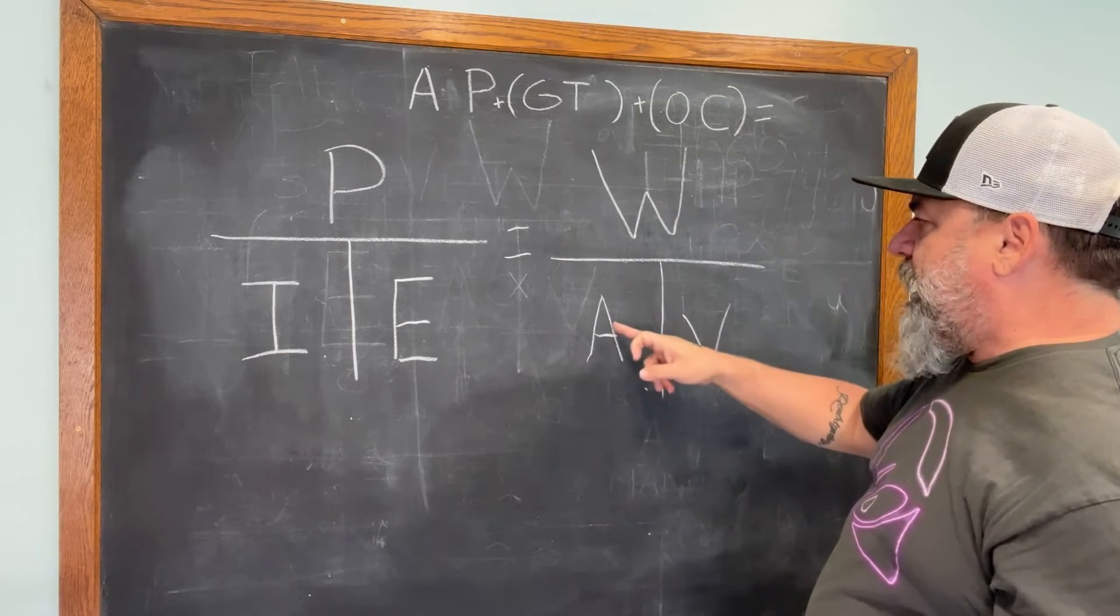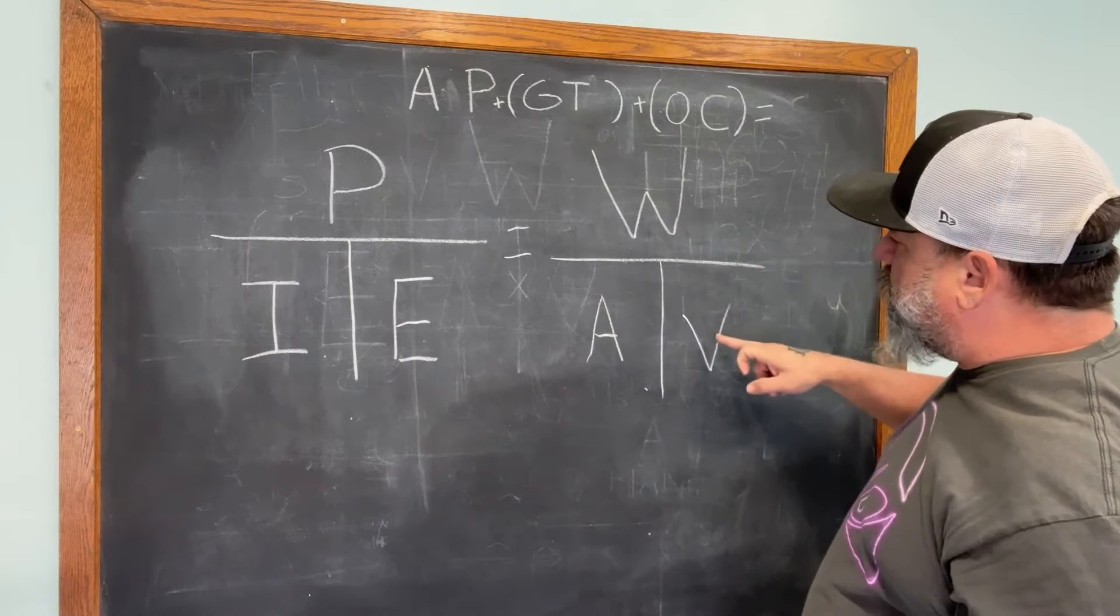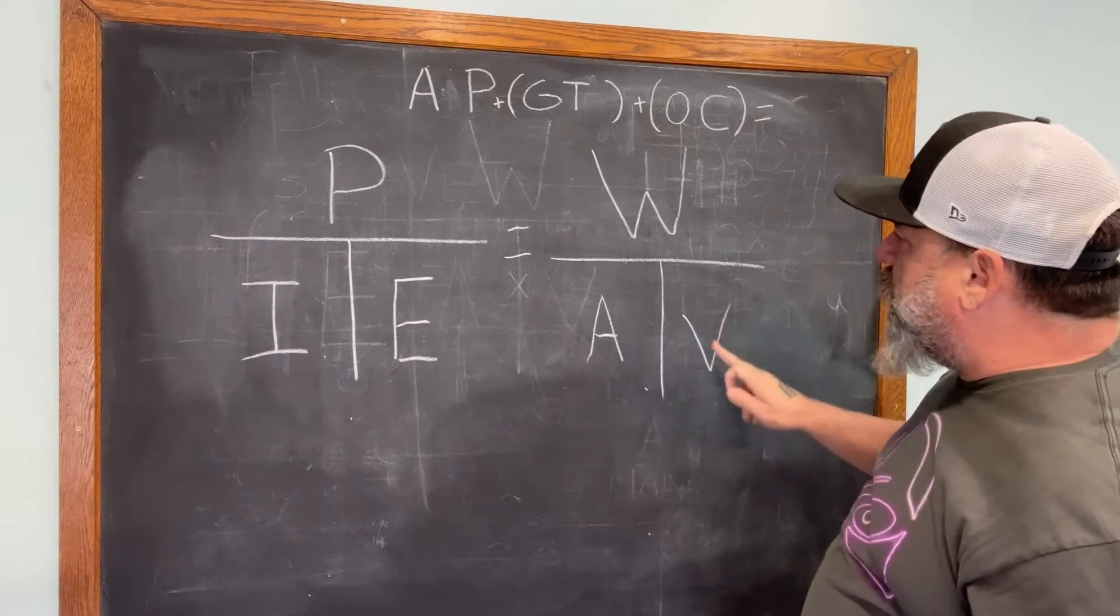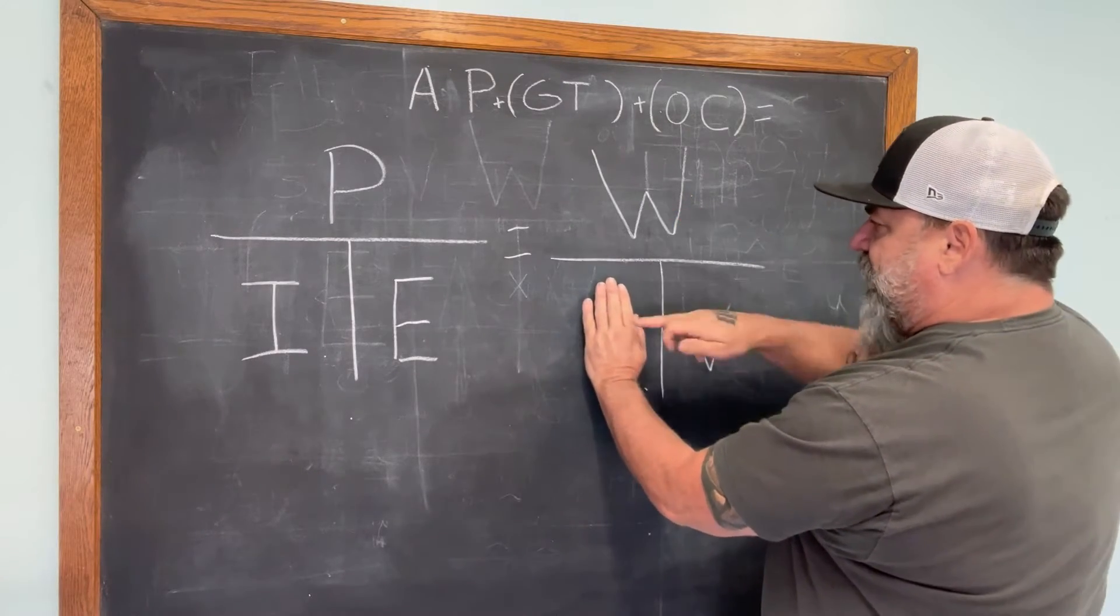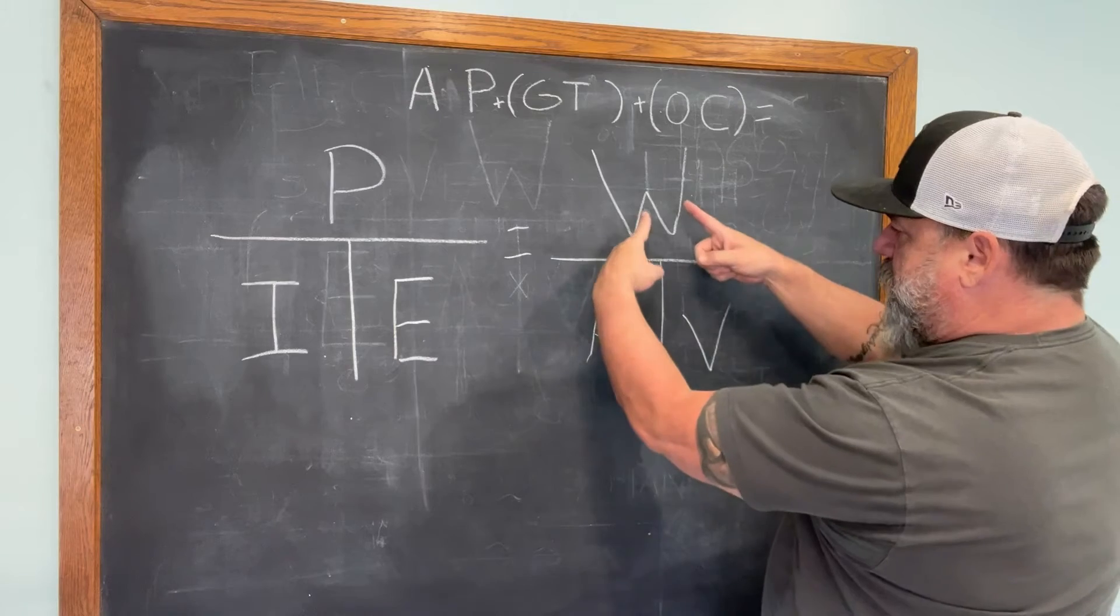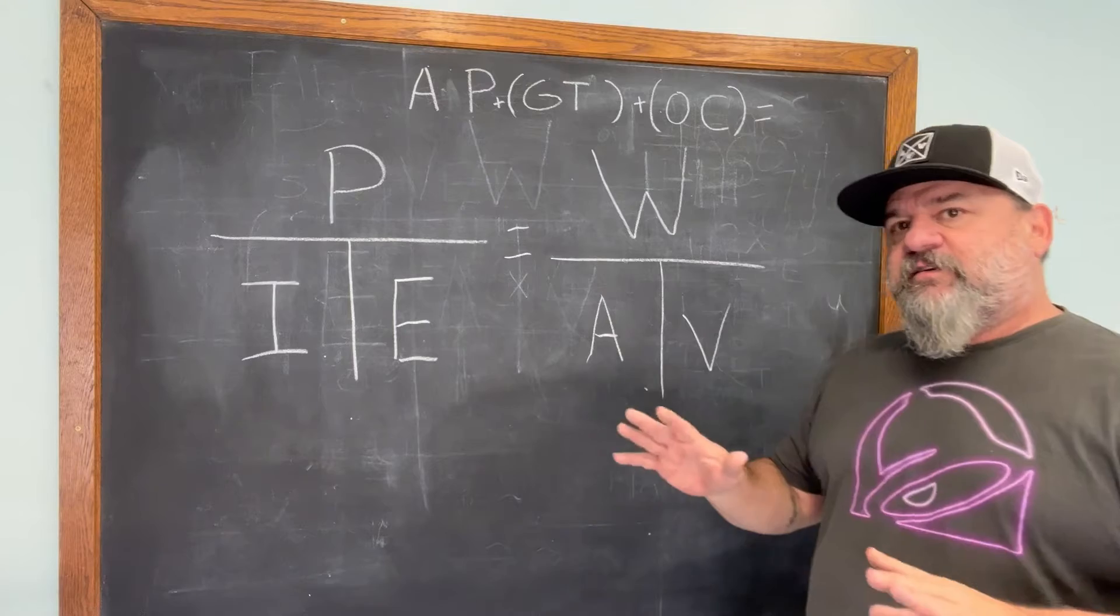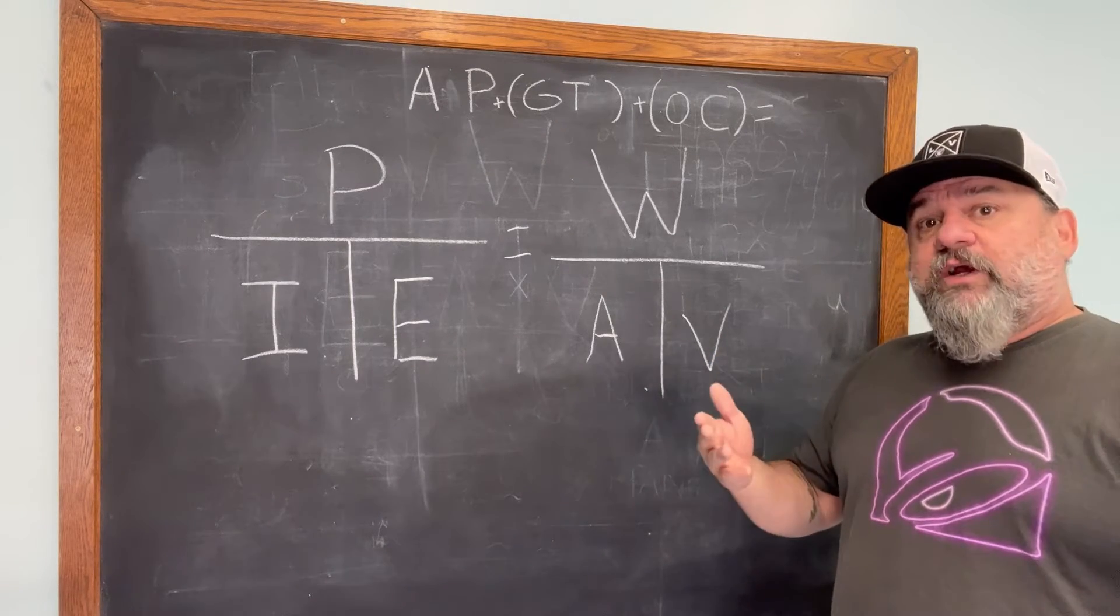So that's what this is: wattage, amperage, voltage. Wattage divided by amperage will give you voltage. Wattage divided by voltage will give you your amperage. Amperage times voltage will give you your wattage. You can cover up each one of these and you know that you divide by going down and across is multiply. Very simple.